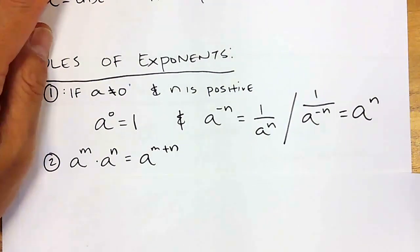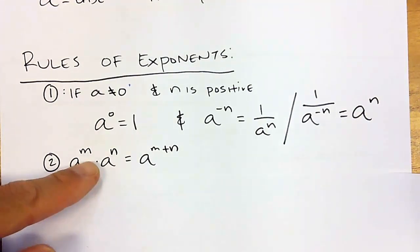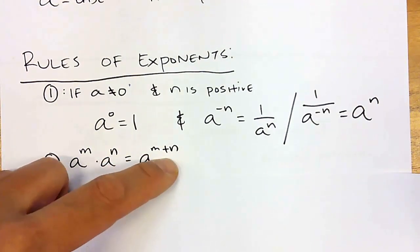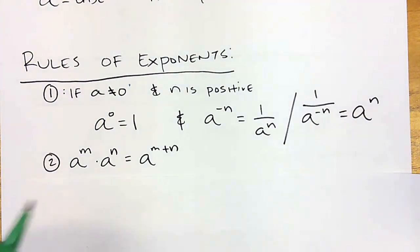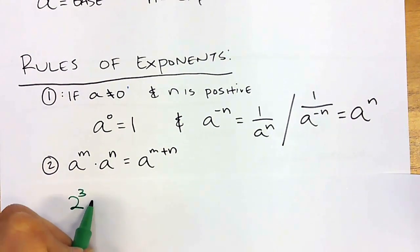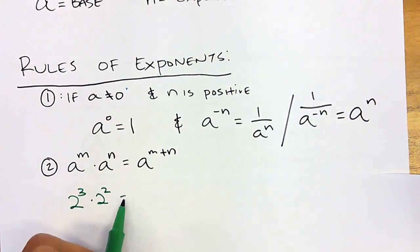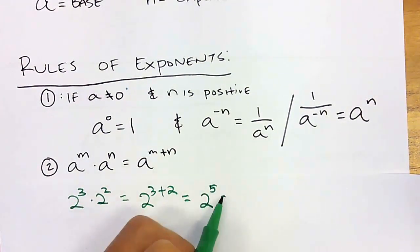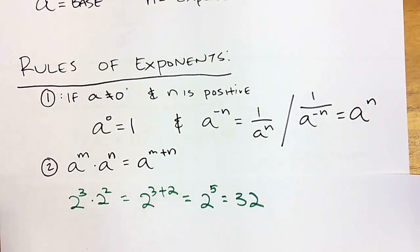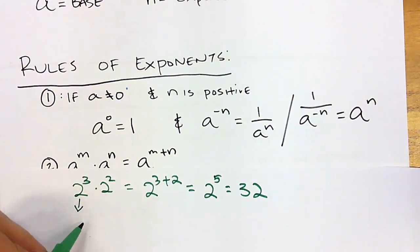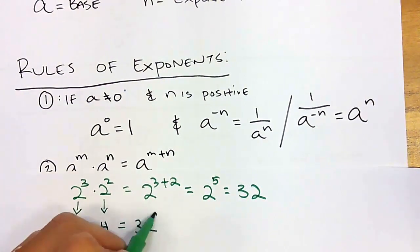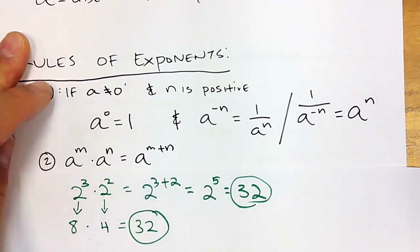If we have two of the same base with different powers, all we're going to do is add up the powers. For example, 2 to the 3rd times 2 to the 2nd equals 2 to the 3 plus 2, which is 2 to the 5th power, which is 32. You could also just say 2 to the 3rd is 8, times 2 to the 2nd which is 4, and 8 times 4 is also 32 — same answer.